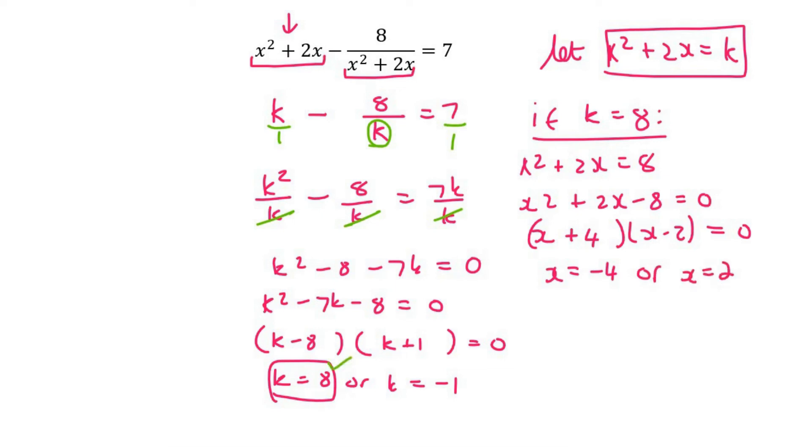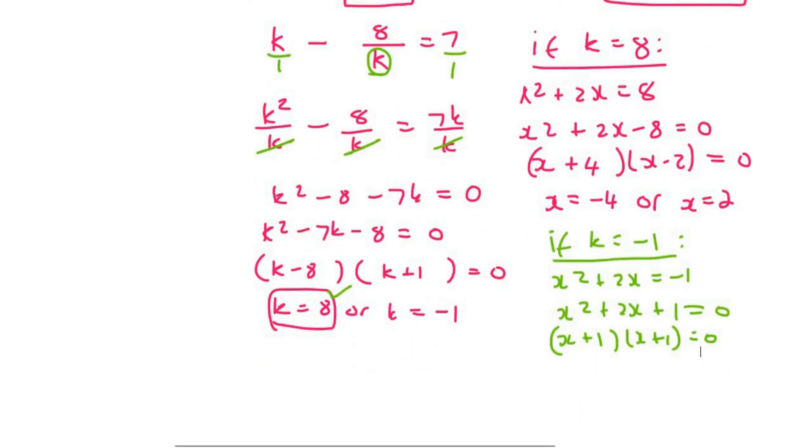Now we can use the other k answer. So if k equals minus 1, then we can say x squared plus 2x equals minus 1, and that's going to be x squared plus 2x plus 1 and this can factorize as x plus 1 and another x plus 1. And so if you had to solve this, you would simply find that x equals negative 1. And so there we've got three different answers.